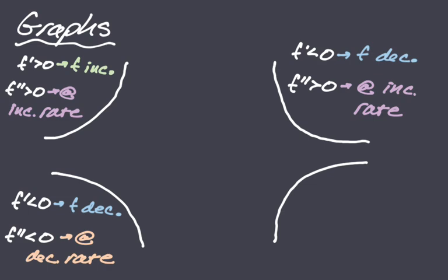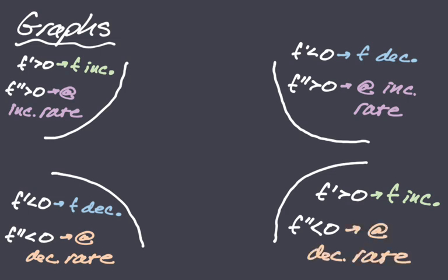Finally, this curve is increasing — f prime is greater than zero, so f is increasing. F double prime in this case is less than zero because this curve is concave down. Concave down means f double prime is less than zero, which means f prime is decreasing, so we say 'at a decreasing rate.' That's all there is to this.